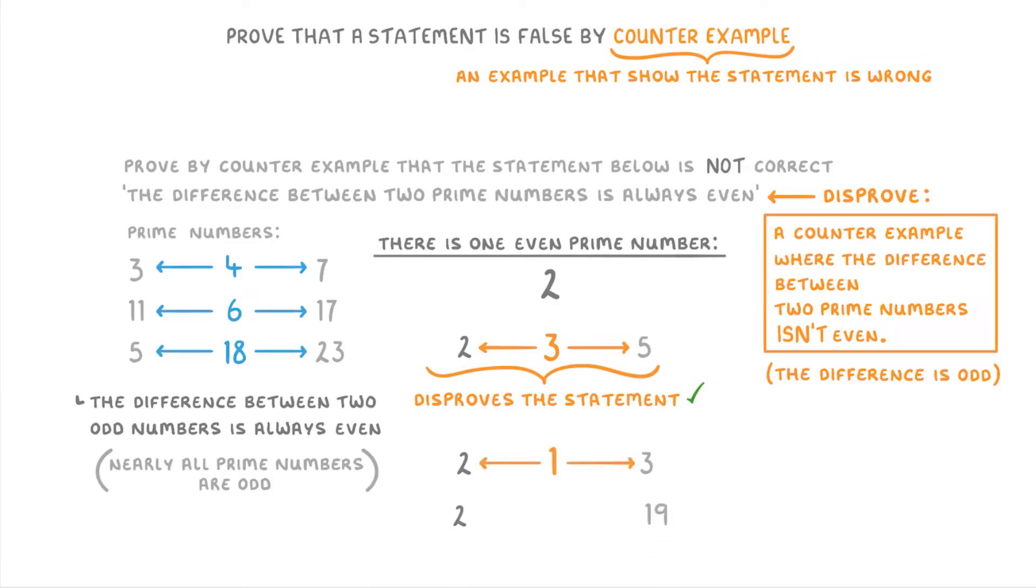or 2 and 19, which has the odd difference of 17. As long as your example disproves the statement, then you'll get all of the marks.